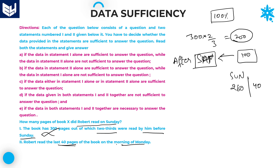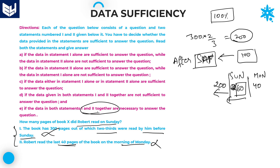Combining both statements: from statement 2, 40 pages were read on Monday morning, so before Monday (i.e., up to and including Sunday) 260 pages were completed. From statement 1, two-thirds = 200 pages were completed before Sunday (up to Saturday). So on Sunday he read 260 − 200 = 60 pages. You get the answer by combining both statements together, so option E is the right answer. I hope you understood the questions — thank you very much for watching.